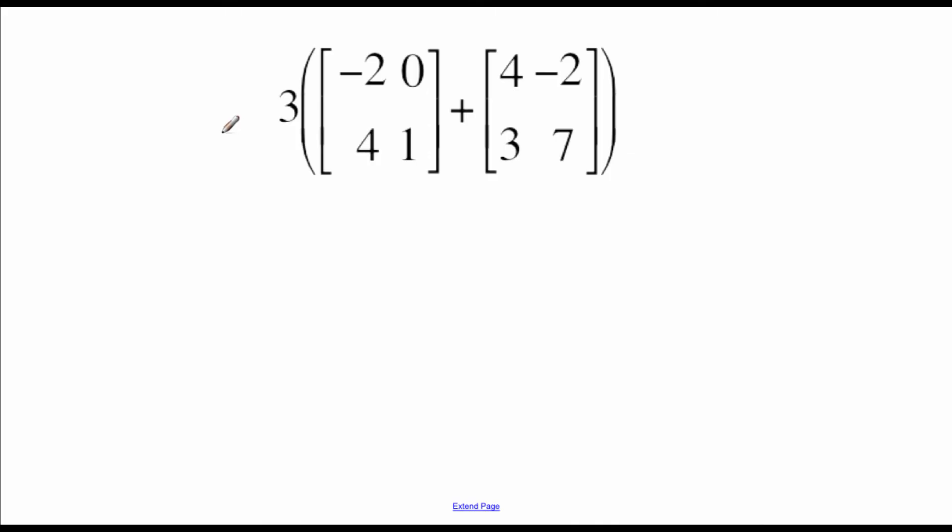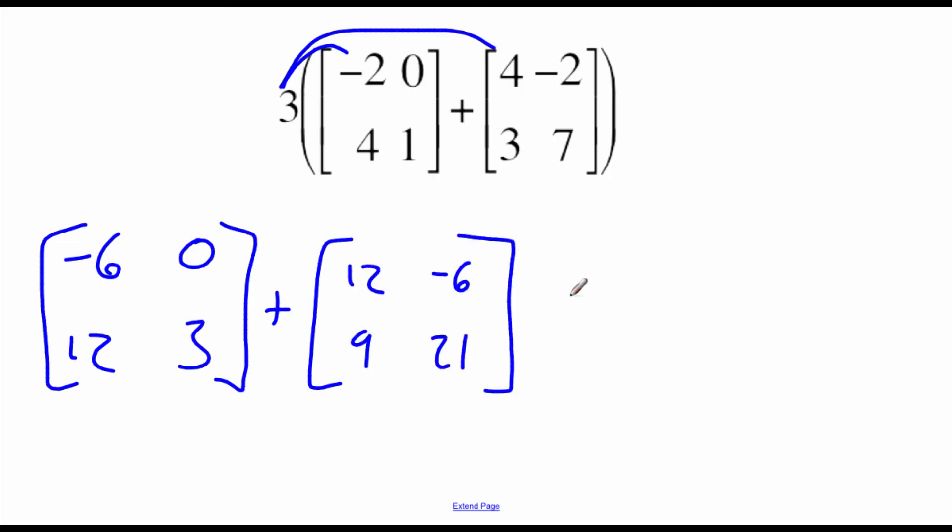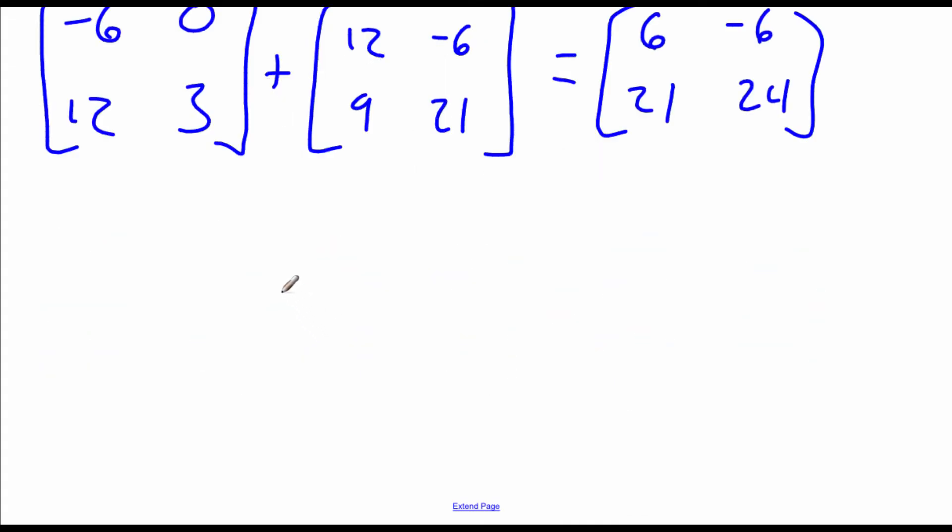Bottom example is using our distributive property. So we've got a couple of options. We could either distribute the three first and then add these two matrices together, or we could add up these two matrices and then multiply by three. And I'm actually going to show it both ways. So I'm going to distribute the three first. So there's our two new matrices after we multiply by three. Then if we add these things together across the top row, we should get six and negative six. Bottom row is 21 and 24. So we get this brand new two by two matrix. Now instead of distributing that three first, let's say we wanted to add those two matrices together. So then we'd be taking three times some brand new two by two matrix, and that would be the matrix two, negative two, seven, eight. And then if we multiply by three, we'd get six, negative six, 21, 24. So it doesn't matter what order we do those operations in. If we distribute the three first and then add, or if we add and then multiply by three, either way, we ended up getting the same exact answer.